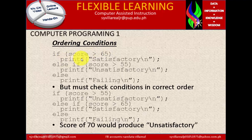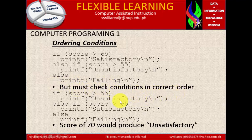Ordering conditions. If score is greater than 65, printf satisfactory. Else if score is greater than 55, printf unsatisfactory. Else, printf failing. But you must check conditions in the correct order. If score is less than 55, printf unsatisfactory. Else if score is greater than 65, printf satisfactory. Else, printf failing.